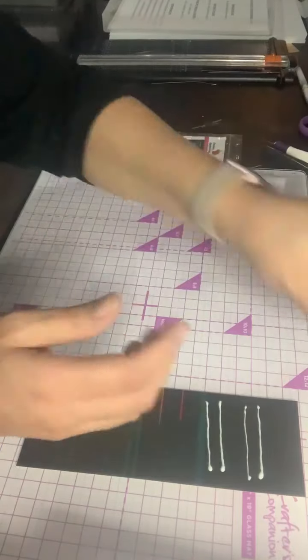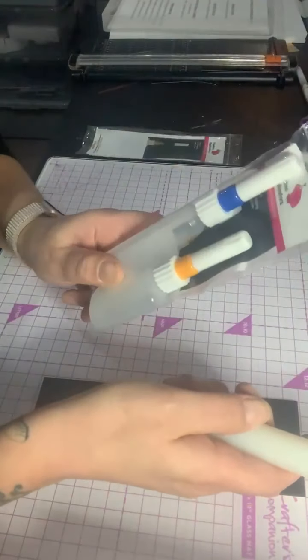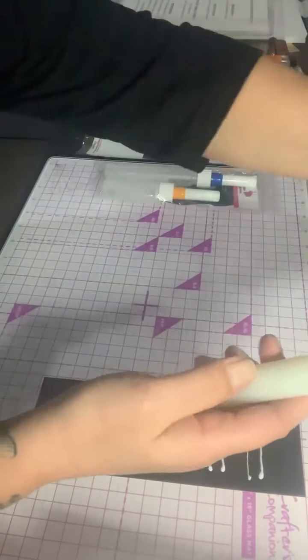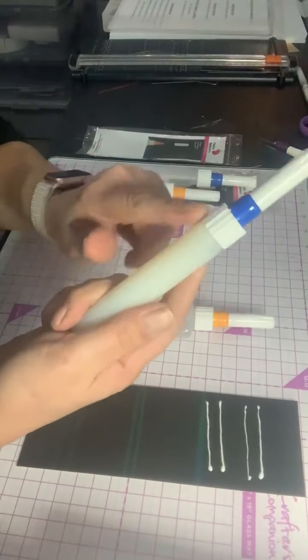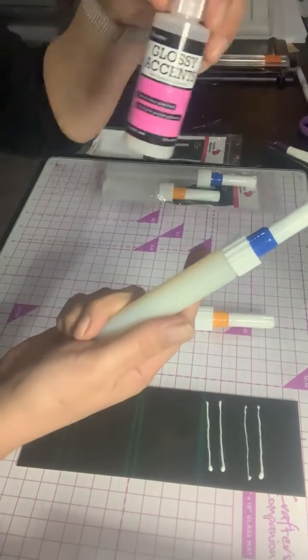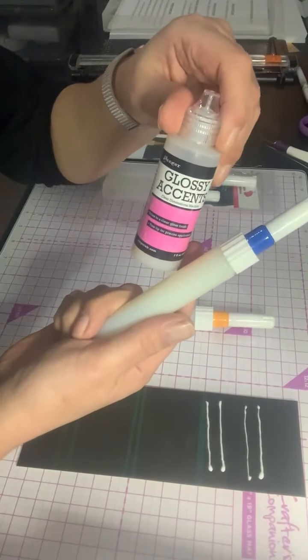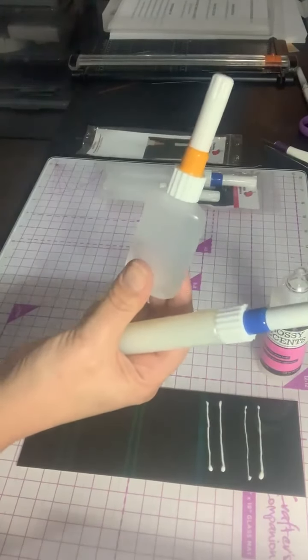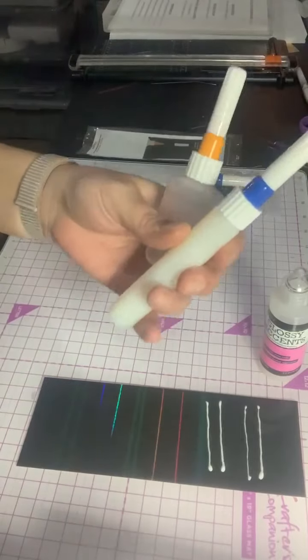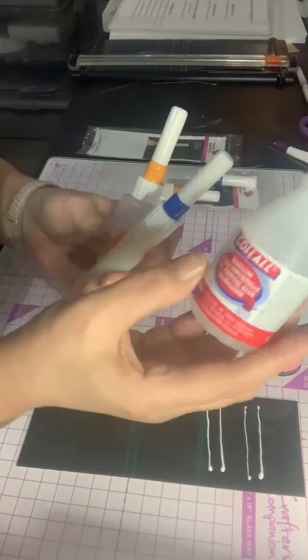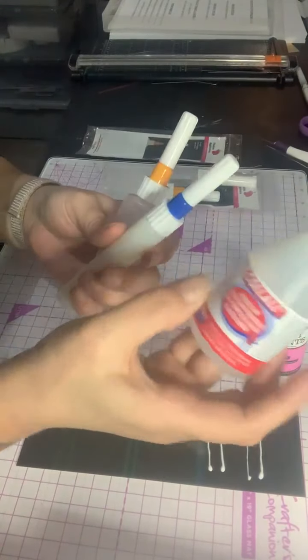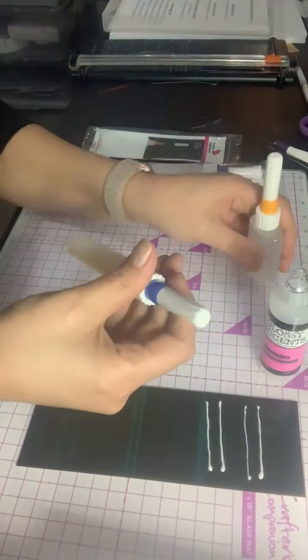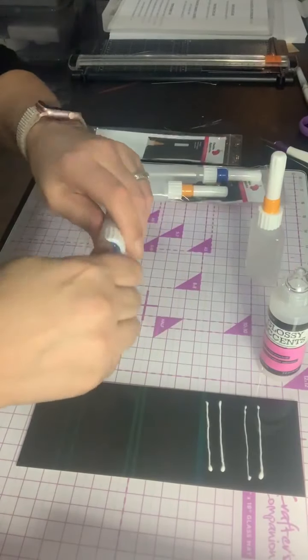Now what we've done is we've taken a second set and inside my blue one, I've popped glossy accents. And inside this one, I have popped, let me reach up, my Collal glue. I just needed to share this with you because it's absolutely amazing.